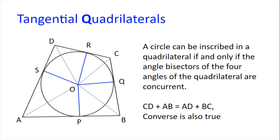A circle can be inscribed in a quadrilateral if and only if the angle bisectors of the four angles of the quadrilateral meet up at one point. This point is in fact O. We can convince ourselves that this is true by showing that OA bisects angle A, OB bisects angle B, OC bisects angle C, and OD bisects angle D, by splitting the quadrilateral into four kites with the blue lines shown.